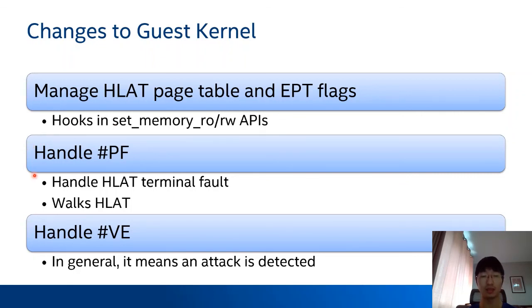KVM also needs to manage the HLite page table and EPT flags for guest pages, placing some hooks in the memory RO or RW APIs — the APIs used to set or remove write permissions in the CR3 page table. KVM also needs to handle page fault exceptions in the page fault handler. From the page fault error code, KVM can determine whether the page fault is an HLite terminal fault. If the fault address is in the PLR, the page fault handler may need to walk the HLite page table in software.